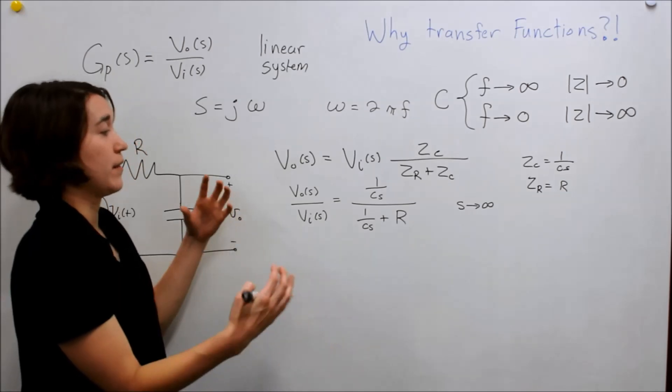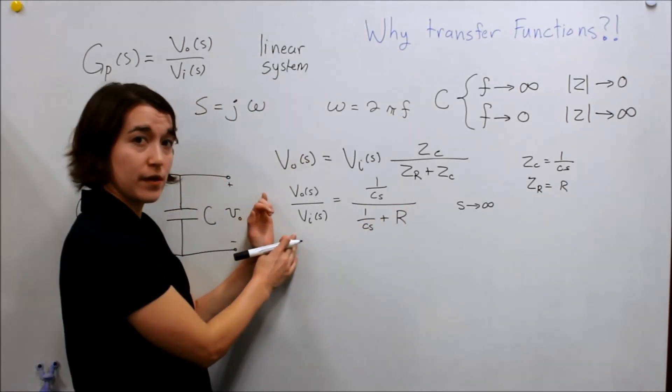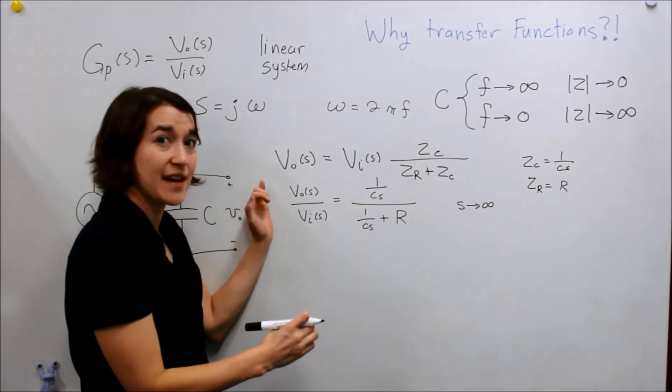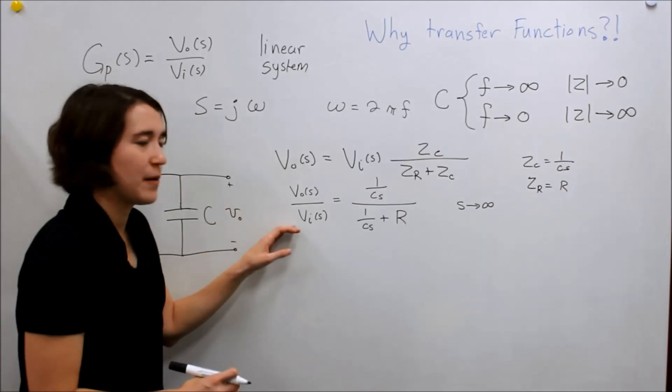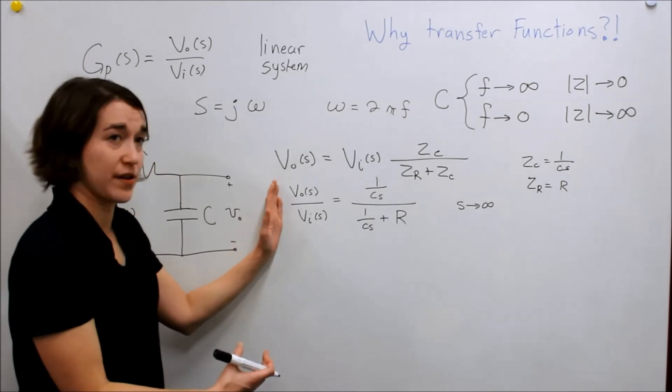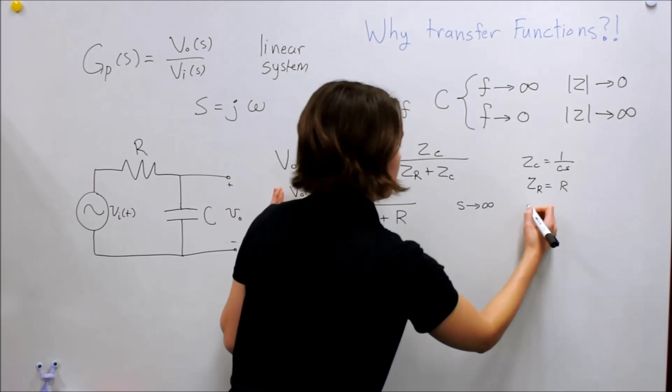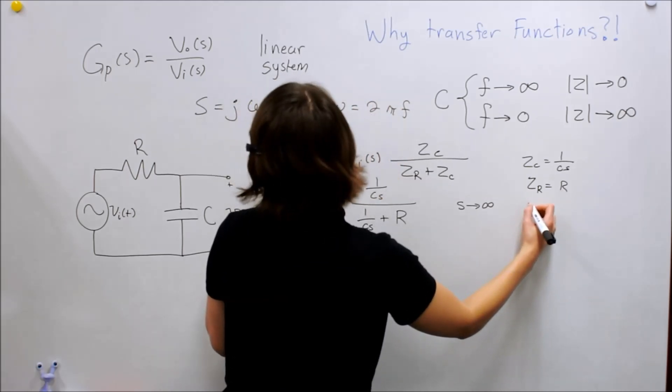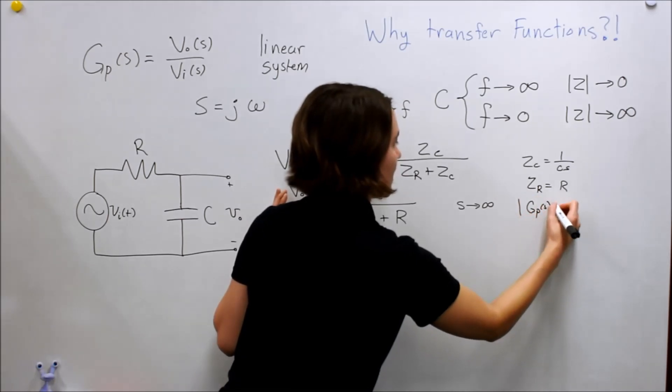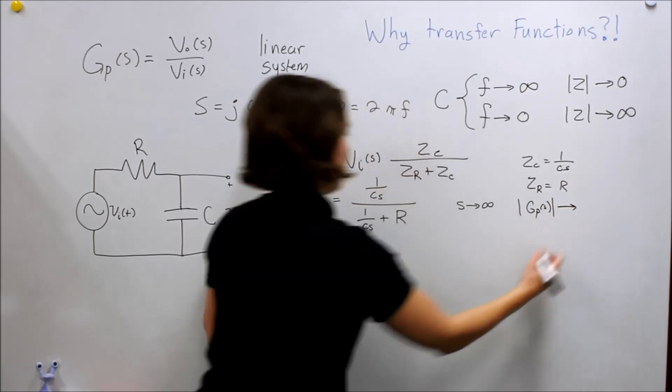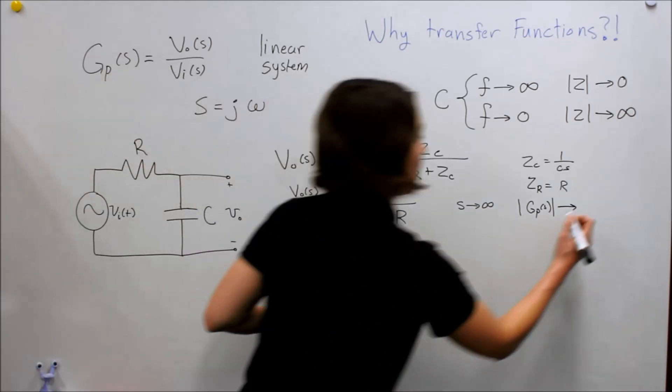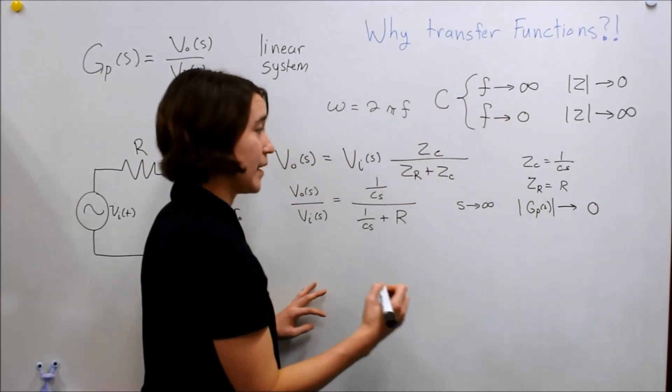Well, we see that S goes towards infinity. These are both zero. And so we're left with zero. So our total, this figure here, which can also be thought of as the gain of this system. So you're putting in an input, how much comes out of that relative. So we'll call this the gain of the system. The magnitude of GP. That would go, because this is zero and this is zero, this whole gain would be zero.